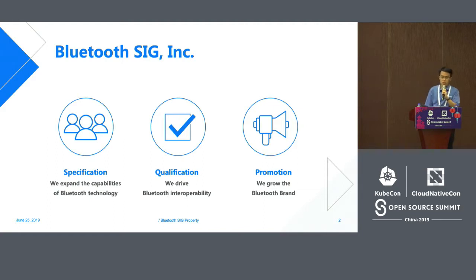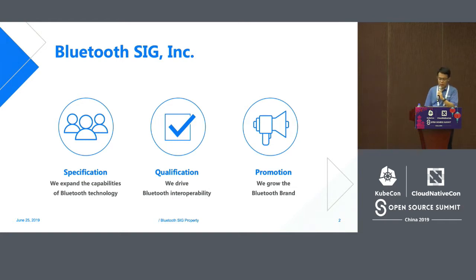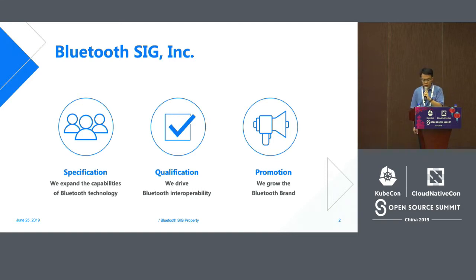Before starting today's session, a brief introduction to our Bluetooth Alliance — it's the Bluetooth Special Interest Group, Bluetooth SIG. We're headquartered in Seattle, U.S. Now in the APAC Region, we're responsible for technology and business development. I myself am mainly responsible for technology development.